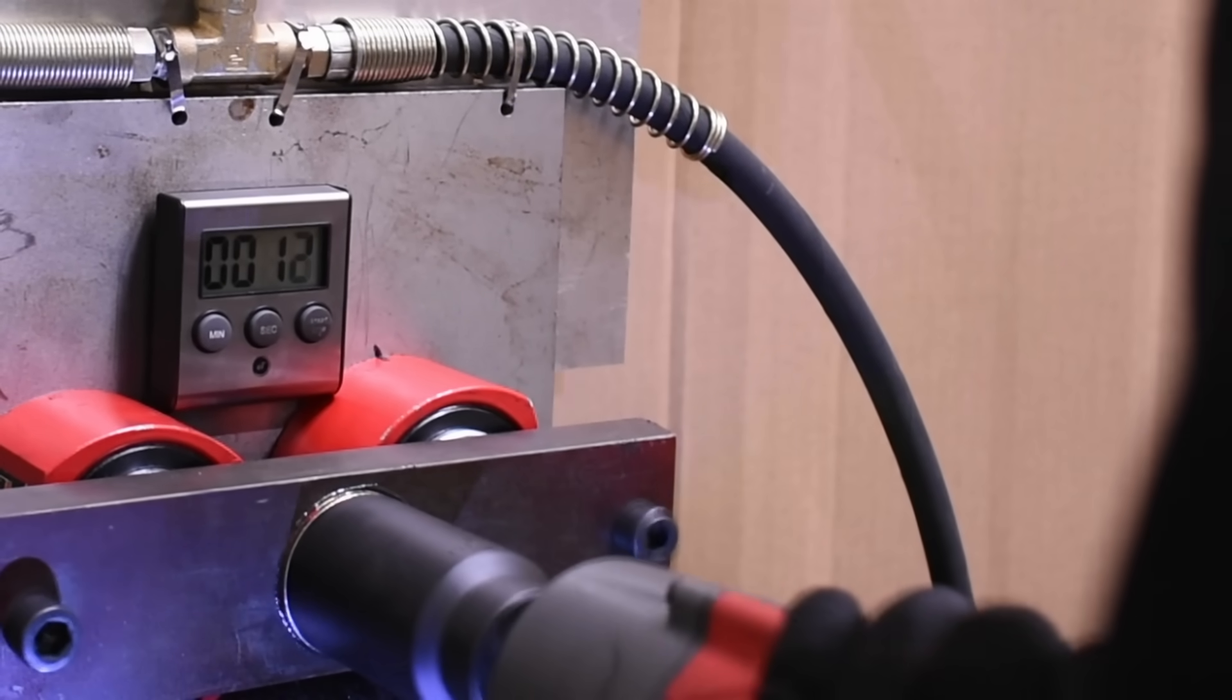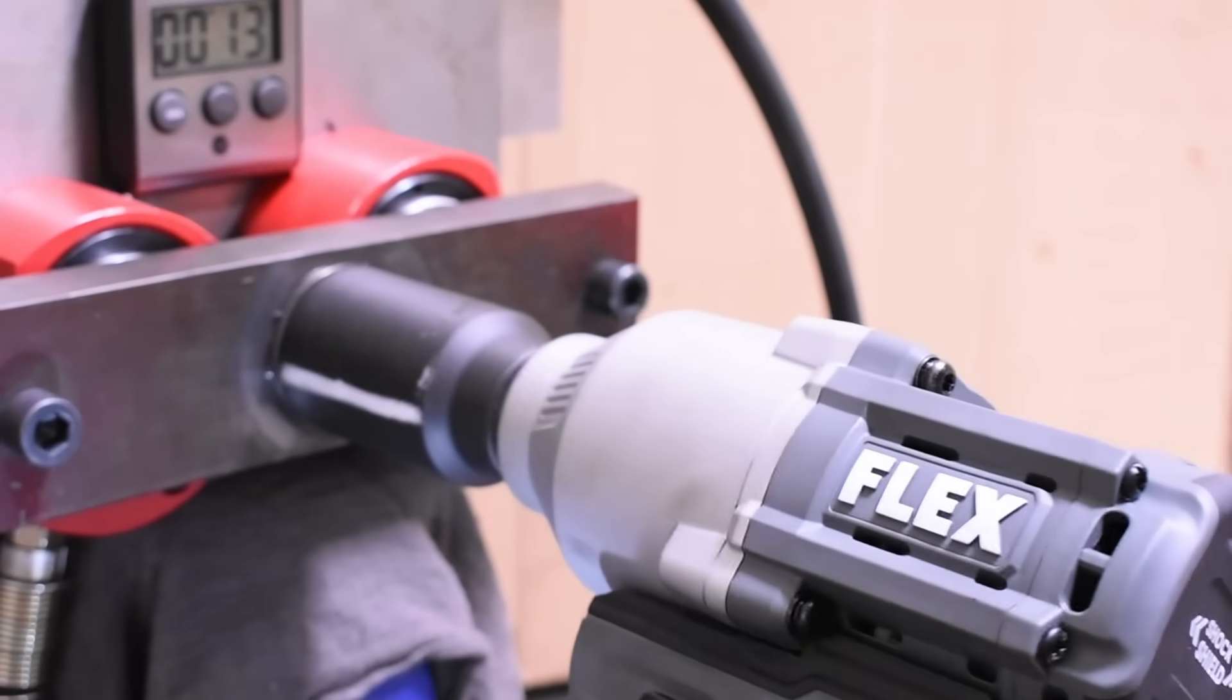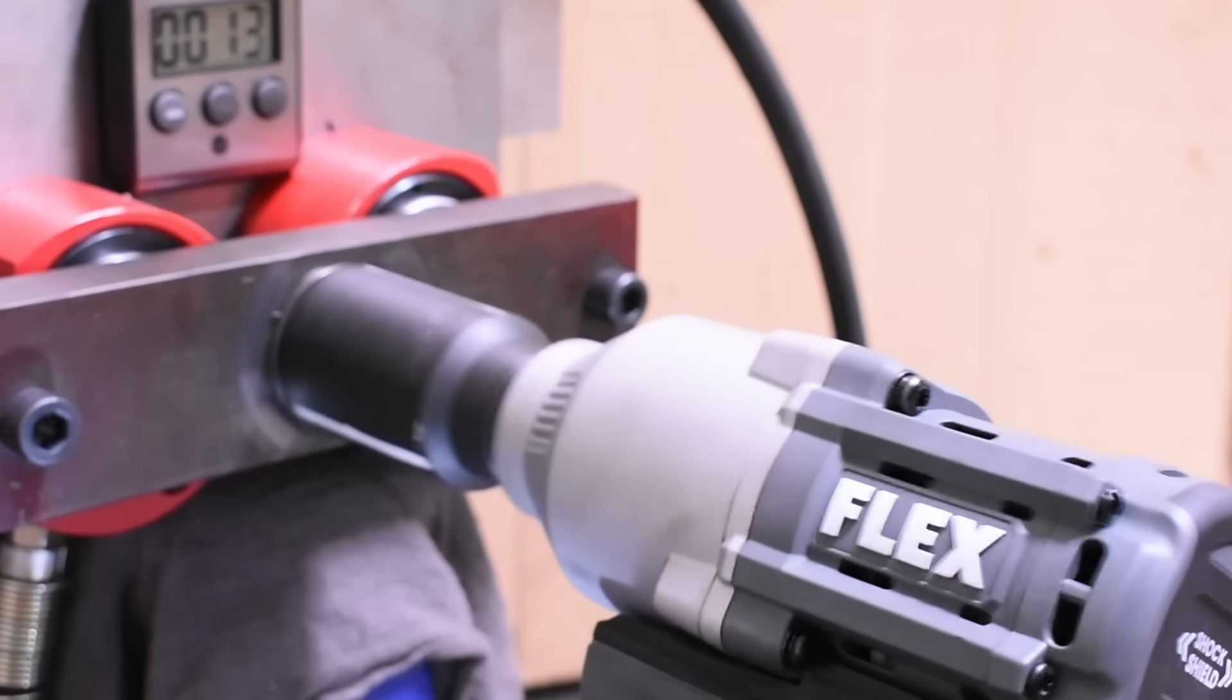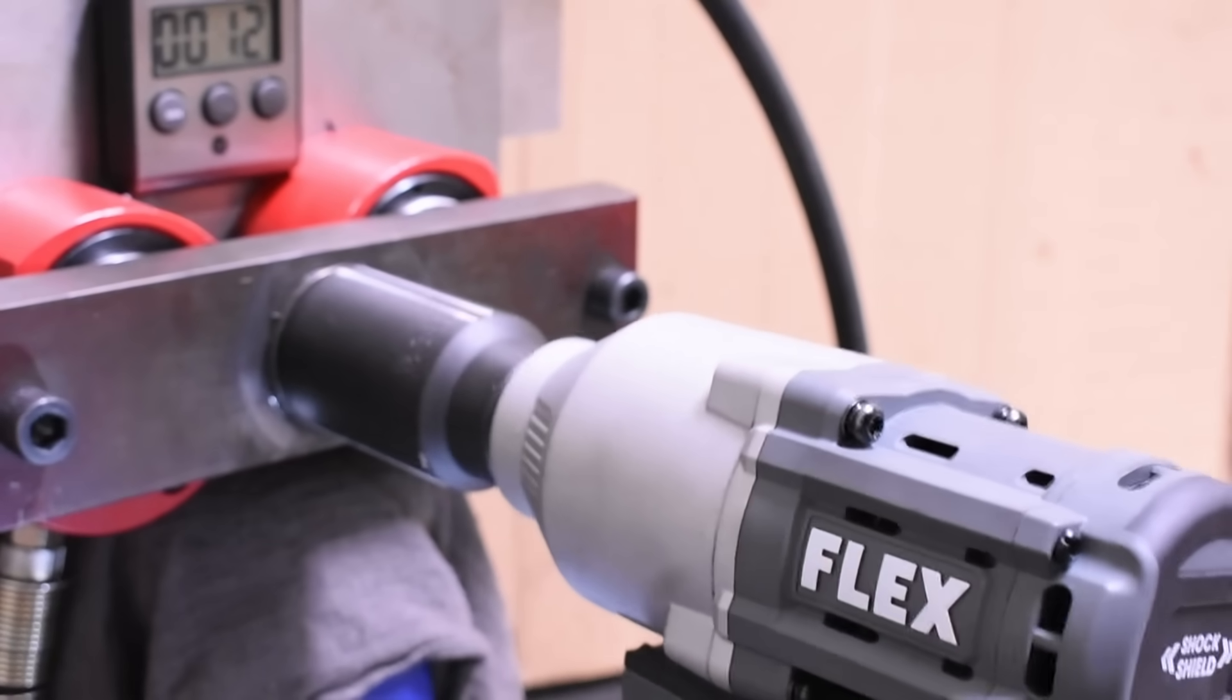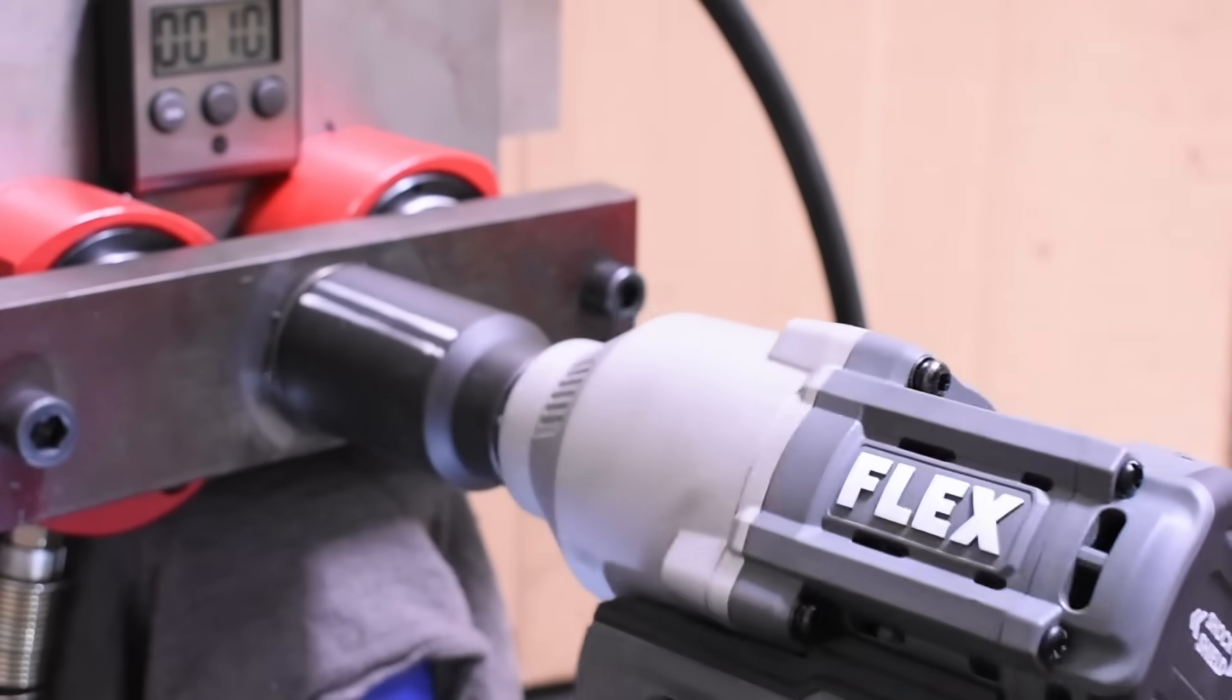Some designs can help mitigate that impact transmission internally, and with other tricks like Flex's shock shield shown here. But it's unavoidable in the sprung ball and cam mechanism cordless tools use, and the more powerful the impact, the more it's going to be using you to provide that foundation for its power. Not all mechanisms work that way, however.